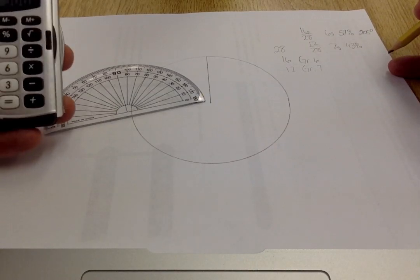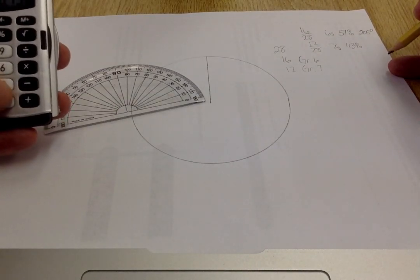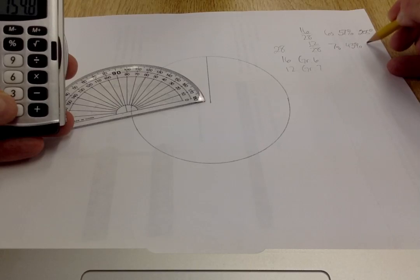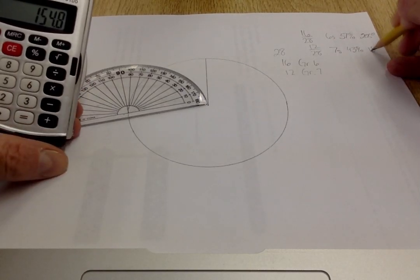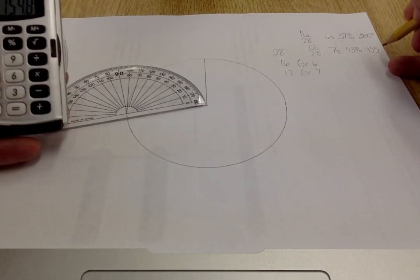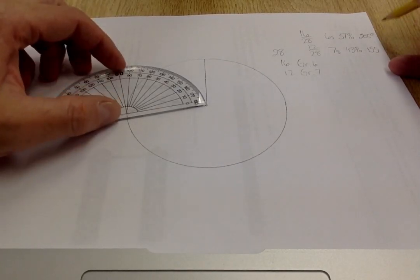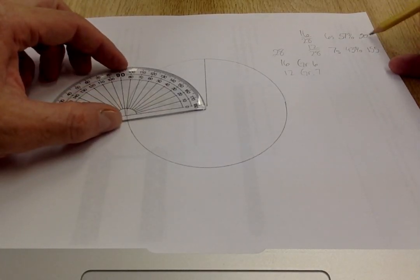Another way to do this is just 360 times 0.43 equals 155. Armed with this information, I have two angles that I need to make: either a 205 degree or 155 degree.